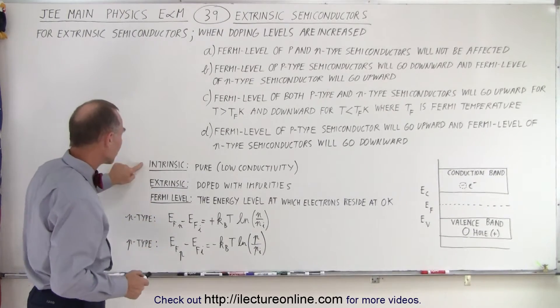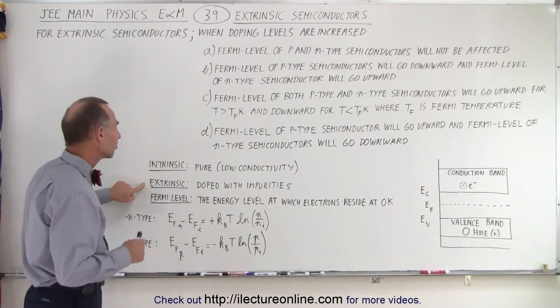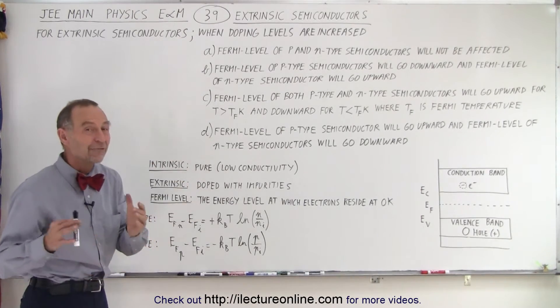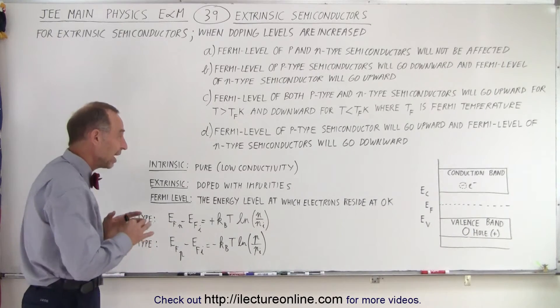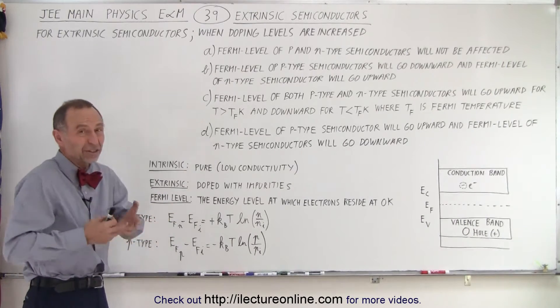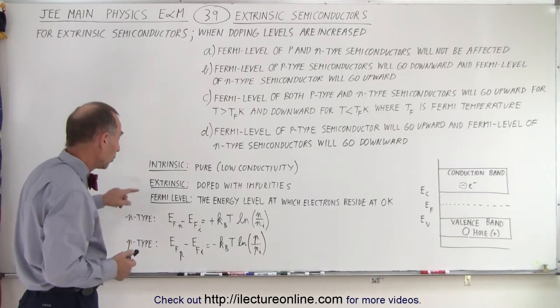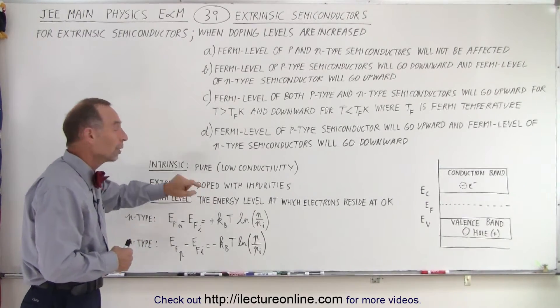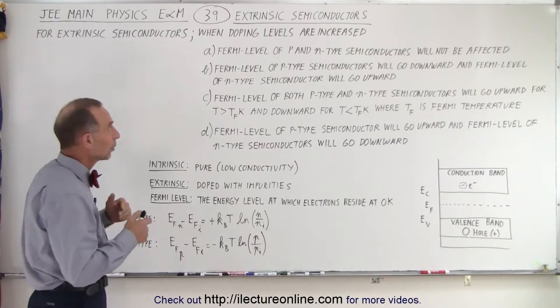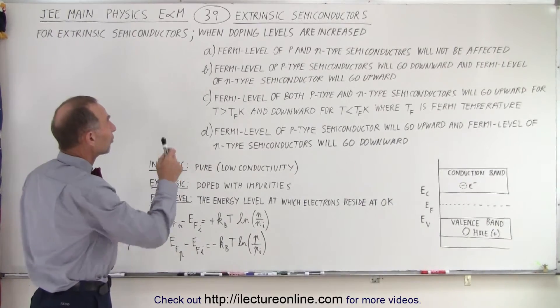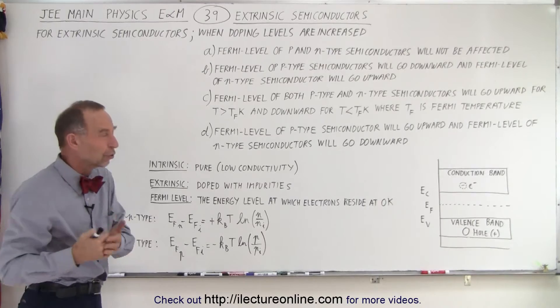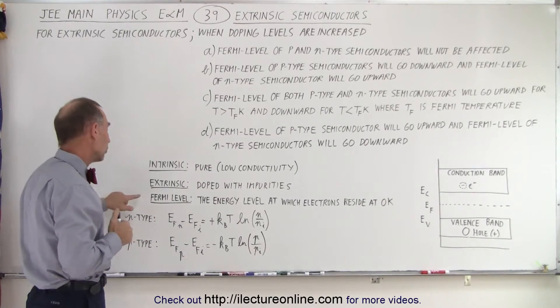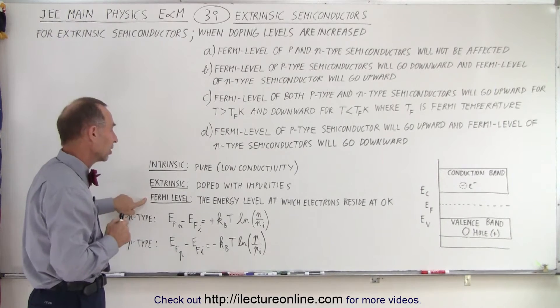The difference between intrinsic and extrinsic semiconductors. Intrinsic semiconductors are pure semiconductors and they have very low conductivity. They're not of much use because they don't conduct electrons very well. So we do want to use extrinsic semiconductors which are doped with impurities. Now, here they're saying is that the doping levels are increased. What is going to be the effect of those increased doping levels? Well, also what we need to know is what the Fermi level actually is.